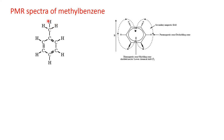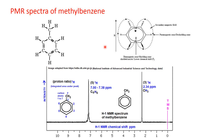The methyl group protons, however, are positioned above or below the ring plane — which is a shielded position where the induced magnetic field opposes the applied magnetic field. Therefore, compared to the ring protons, the methyl protons' PMR peak arises at upfield. So in the PMR spectra of toluene, the five ring protons give a signal at downfield, while the three methyl protons give a signal at upfield. With this, we have come to the end of today's discussion. Thank you.